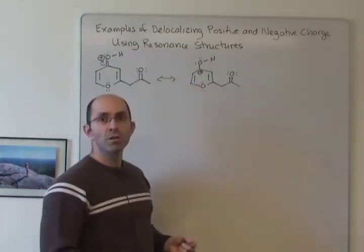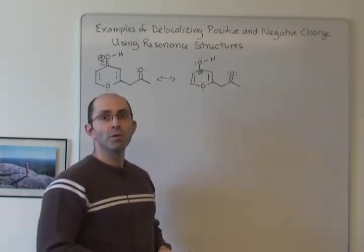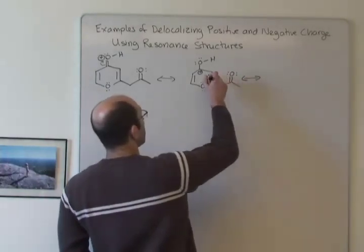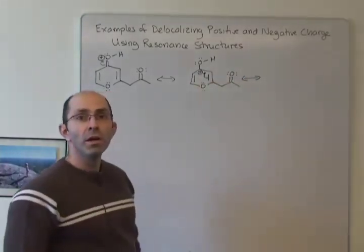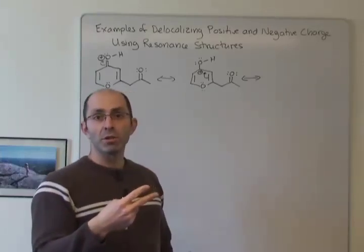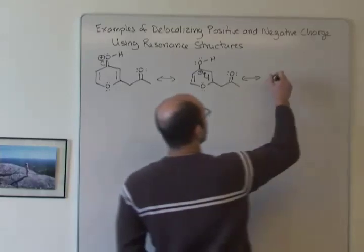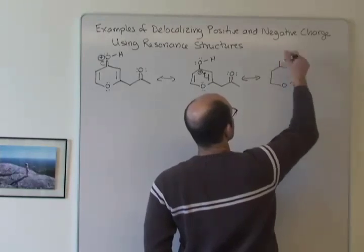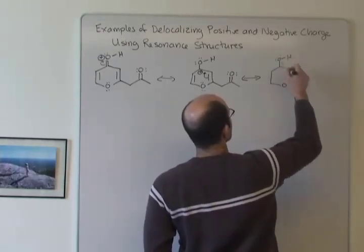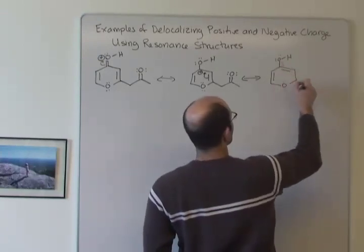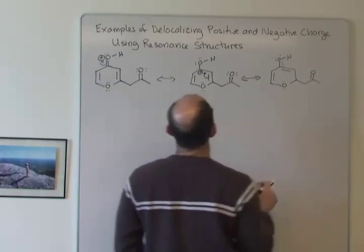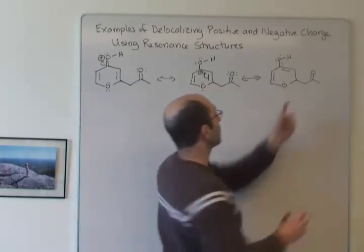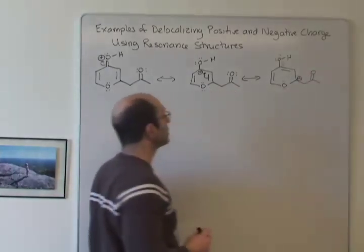Now we can look here and say, is there some way that electrons can flow towards that carbon so the carbon doesn't have a positive charge? We actually have two options at this point. One of them is to take this pi bond — we're going to move either lone pair electrons or pi bond electrons. We have a pi bond there we can move and draw the structure that we get. There were four bonds to this carbon; now there are only three bonds, so that carbon is positively charged.